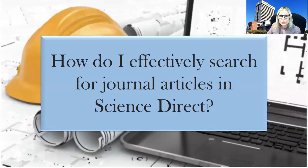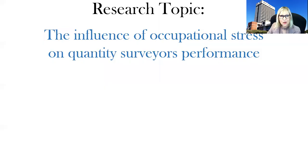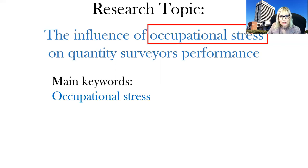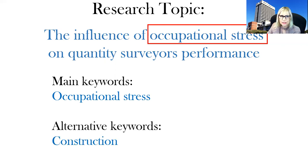How do I effectively search for journal articles in Science Direct? We will go back to the original research topic: the influence of occupational stress on quantity surveyors' performance. I chose occupational stress as my main keyword, and alternative keywords — if you look at quantity surveyors, this alternative can basically replace quantity surveyors in your search.